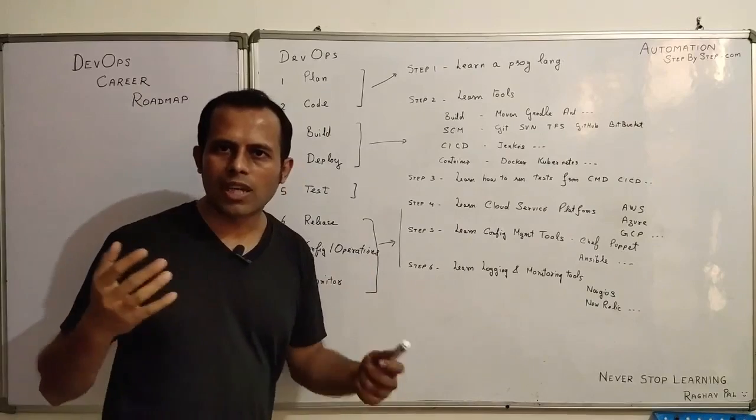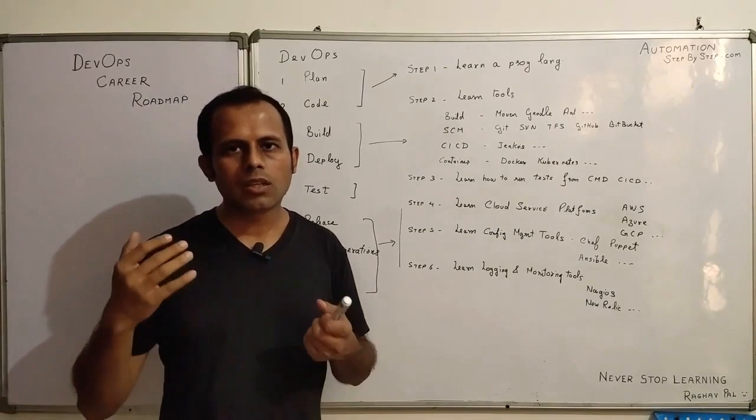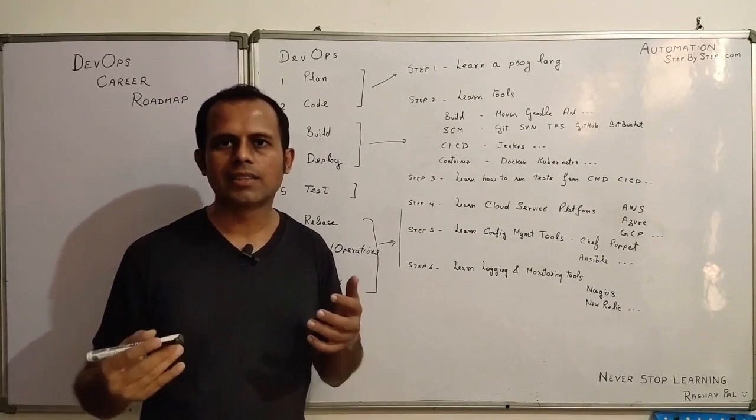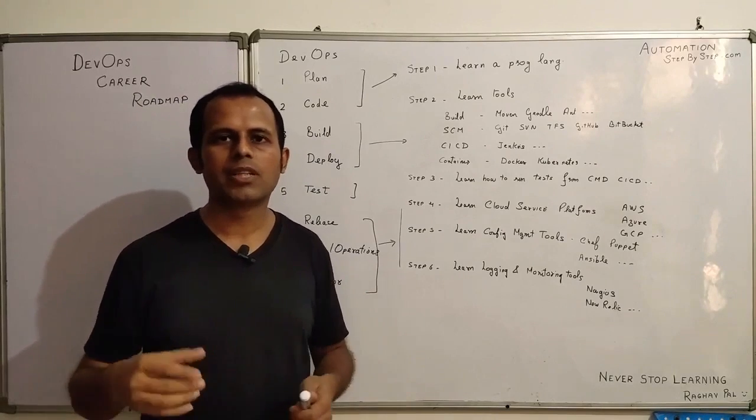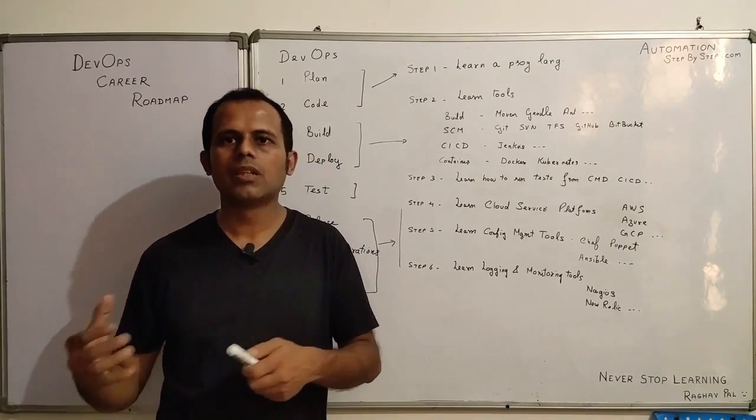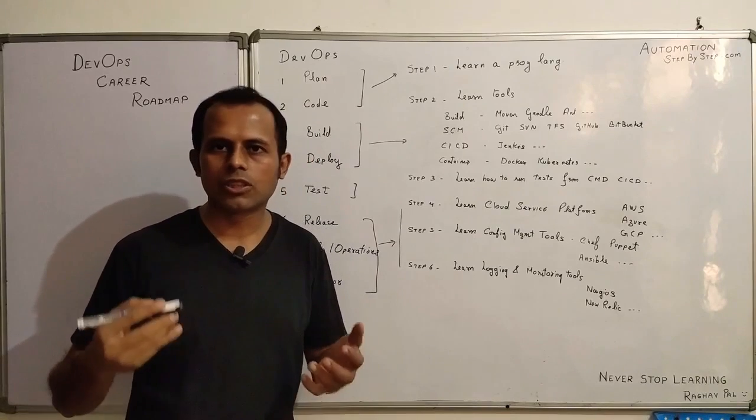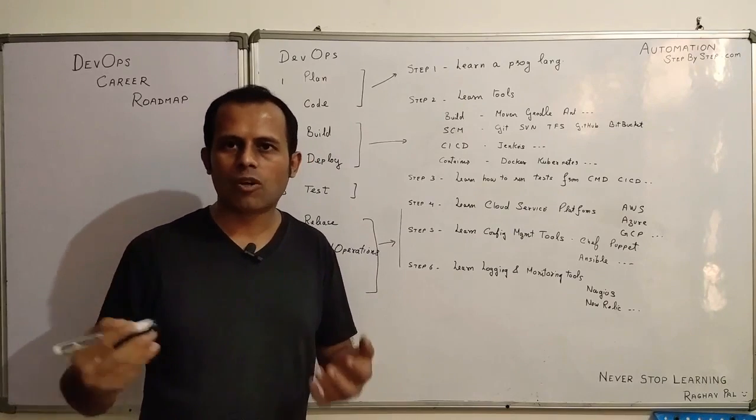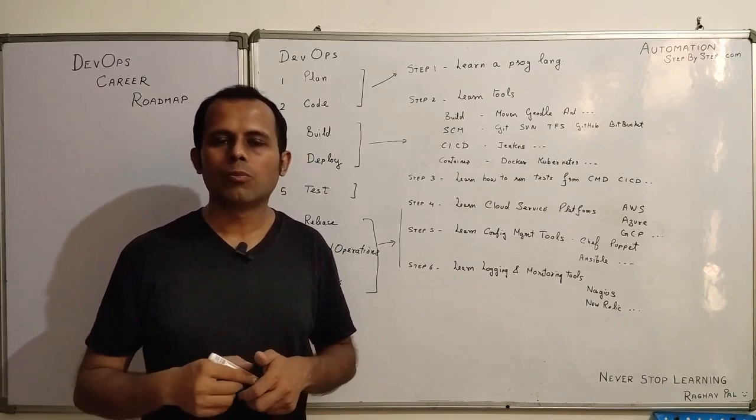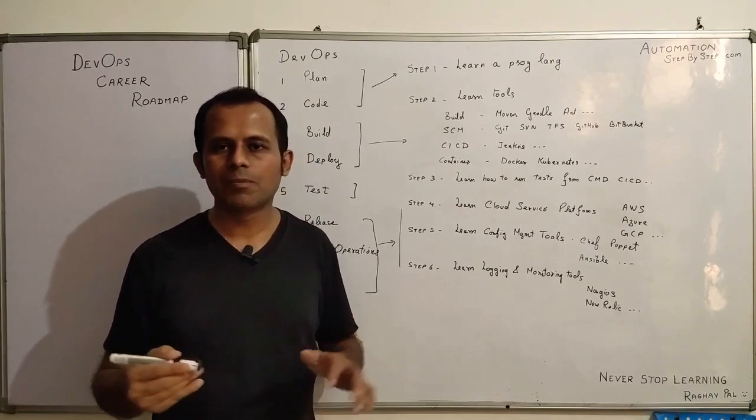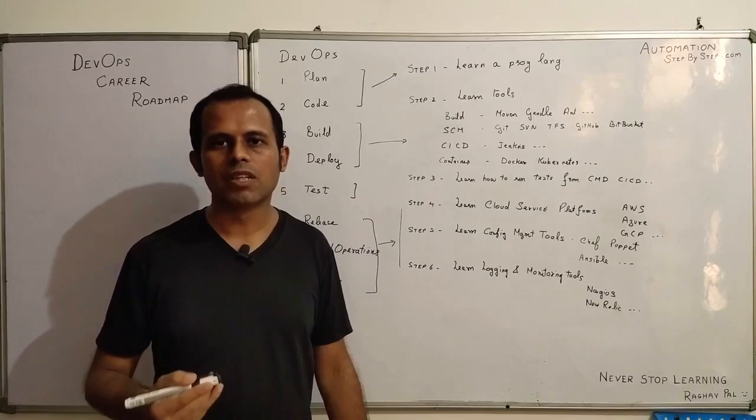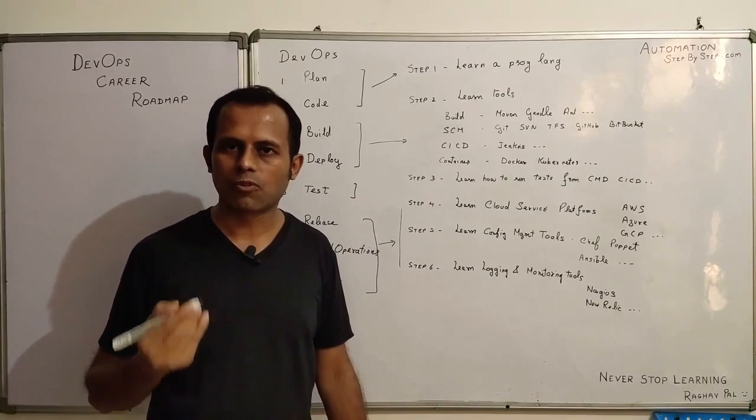When we talk about DevOps process, based on the product, project, and organization, there can be so many other enhancements, changes, updates. For example, you may need to learn some operating system like Linux and go a little bit more deeper. You may want to learn some performance or security testing platforms and tools, and you may need to go into the database and learn database testing. So based on the needs, some things will change, but this is the core. This is what you need to learn to become eligible for a DevOps role.